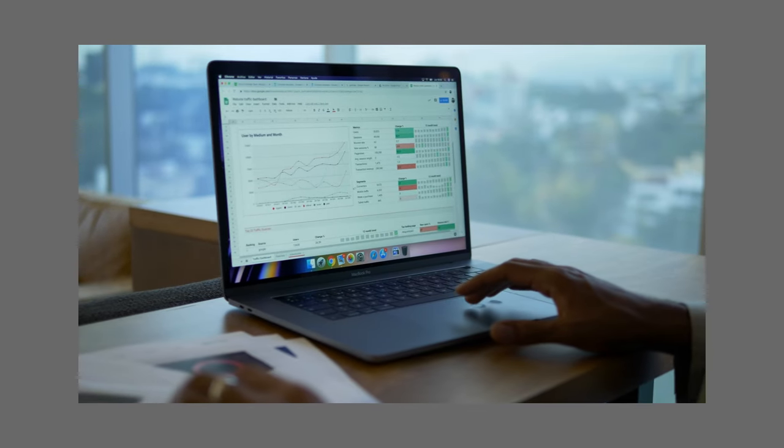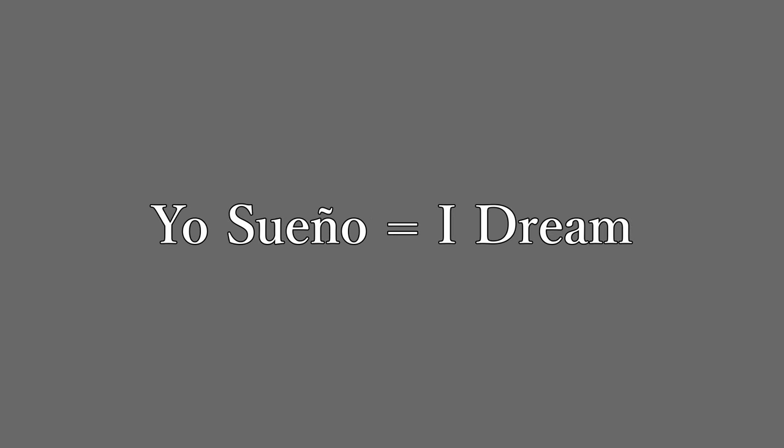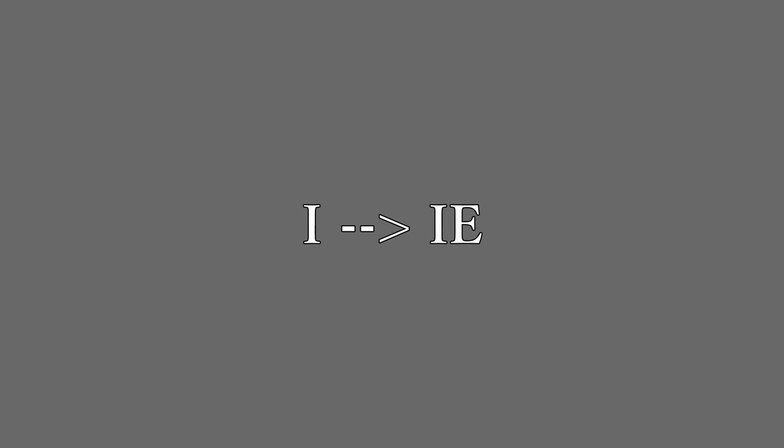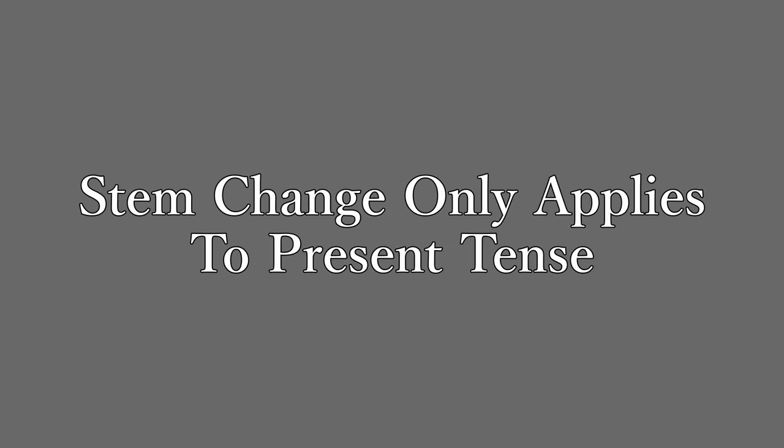Before the next tense, it would be important to talk about stem-changing verbs. The stem is what remains after removing the infinitive ending — for hablar, removing AR leaves habl. There are five types of stem-changing verbs: E to IE as in querer — yo quiero (I want); O to UE as in soñar — yo sueño (I dream); I to I as in repetir — yo repito (I repeat); U to UE as in jugar — yo juego (I play); and I to IE as in inquirir — yo inquiero (I inquire). This applies to all conjugations in the present tense except nosotros and vosotros, where the stem does not change. However, in every other tense, stem changes do not apply.